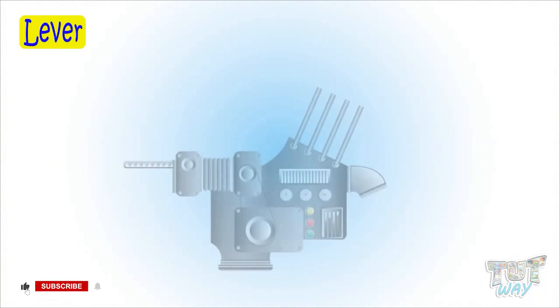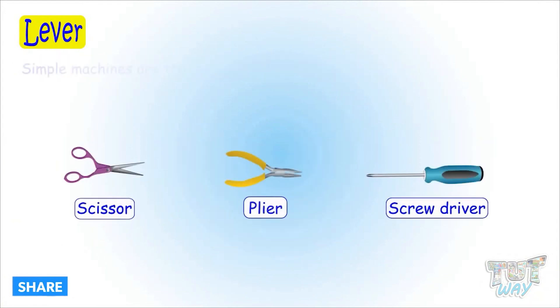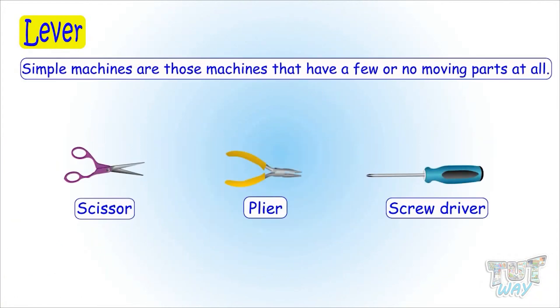We have already learned that machine is any structure that makes our work easier, and simple machines are those machines that have a few or no moving parts at all.